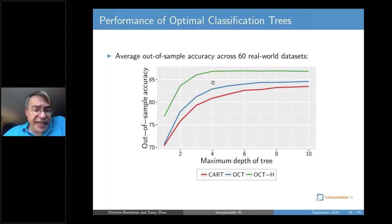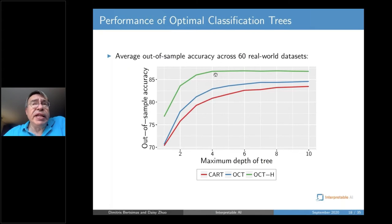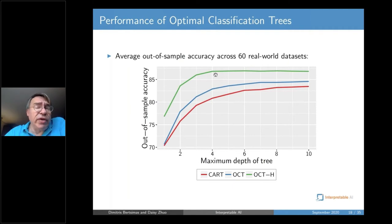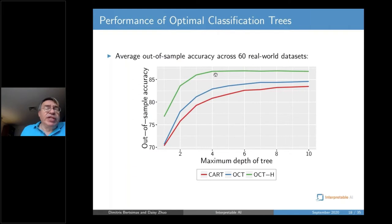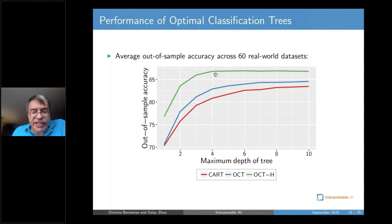There is an additional 3% to 5% improvement if you add hyperplanes. With hyperplanes you do penalize interpretability a little, but we have a version that produces sparse planes where only a pre-specified number of variables are included — for example, two variables: two times blood pressure plus three times temperature less than 150. So there is a sizeable improvement in performance as a result.